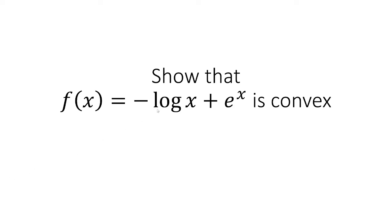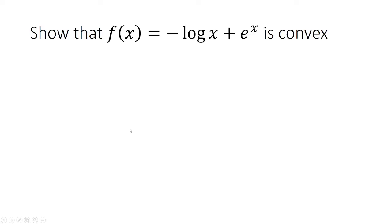Show that f of x equals negative log x plus e to the x is convex. So the way we're going to approach this is by taking the second derivative and showing that it's positive.